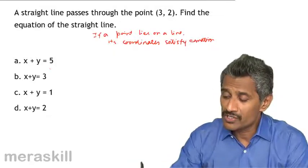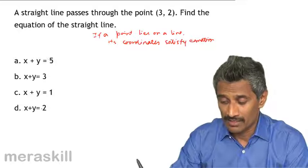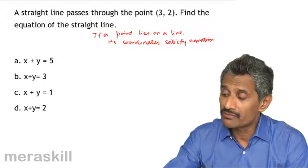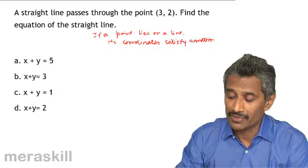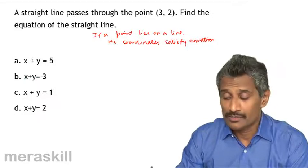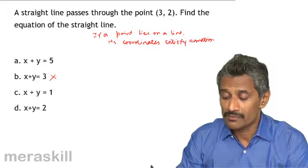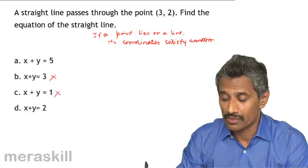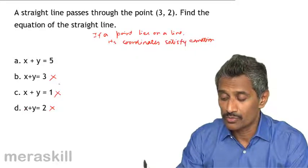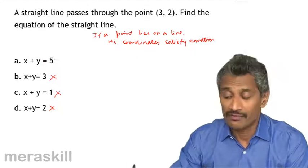So, if this point, which is the line among these, whose equation will be satisfied by 3 comma 2. For example, 3 plus 2 is not 3. So, they're not going to satisfy. 3 plus 2 is not 1. Not this. 2 plus 2 is not 2. 3 plus 2 is 5.